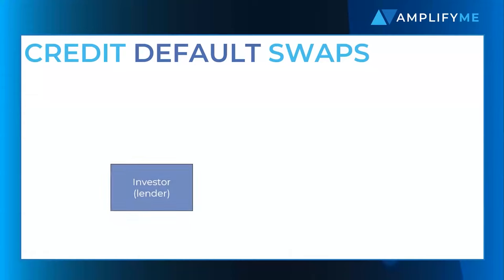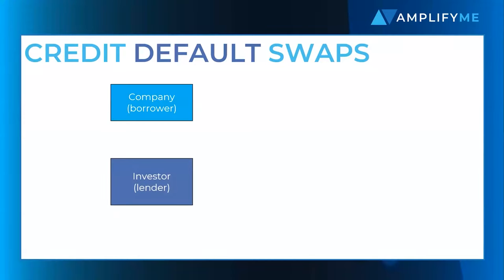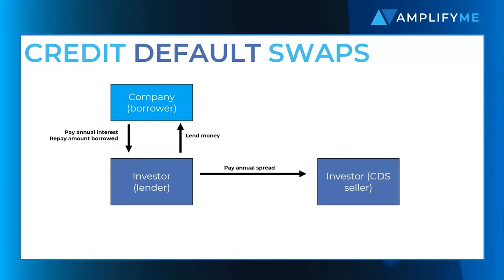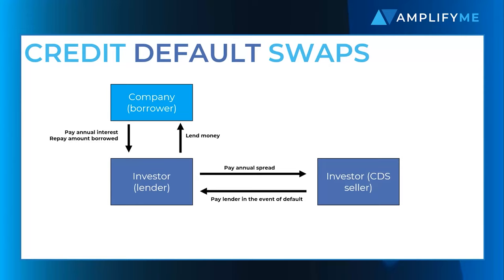So let's say that you're an investor lending money to a company at a fixed annual interest rate. The main risk you have is that the company will go bankrupt and will not be able to repay the money that they have borrowed. So you buy a credit default swap from another investor who, in exchange for an annual premium, also known as a spread, will pay you the full amount that was lent in the event that the company defaults.